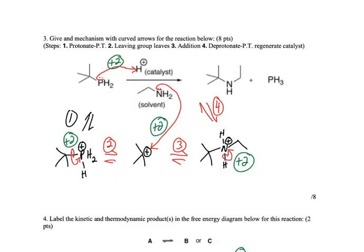All right, for this one, mechanism, arrows for the reaction below. First step is protonate, so you have H-plus here, so we're going to protonate. You should recognize this probably as an SN1 reaction. Protonate. Second step, leaving group leaves.